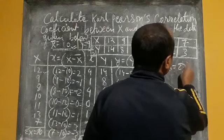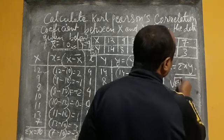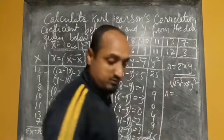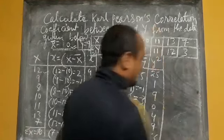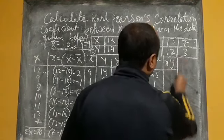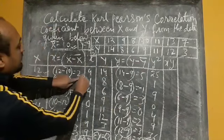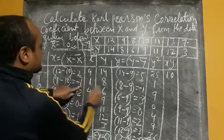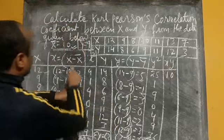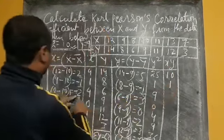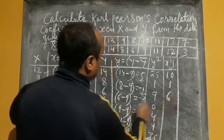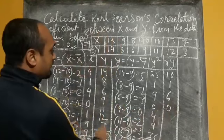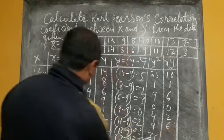Now we apply the formula r equals summation xy divided by the square root of summation x-squared into summation y-squared. We need to calculate one more column for xy — the product of small x and small y. For each pair: 2 × 5 = 10; minus 1 × minus 1 = 1; minus 2 × minus 3 = 6.